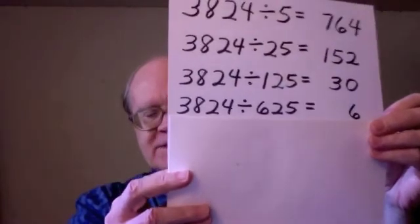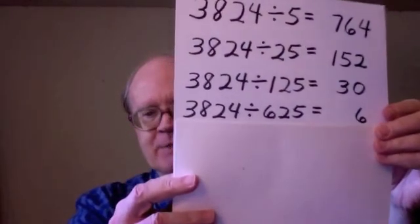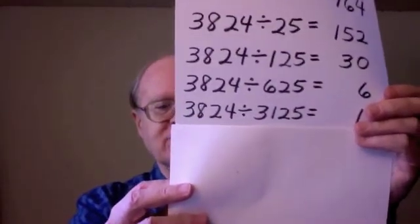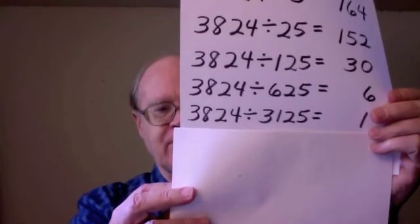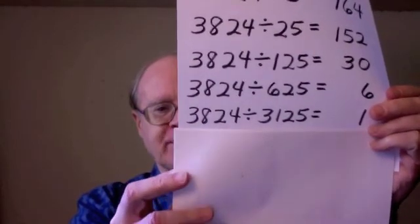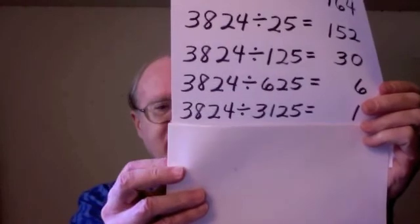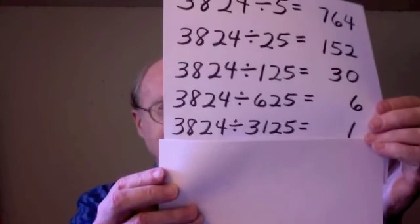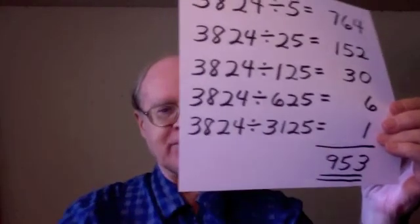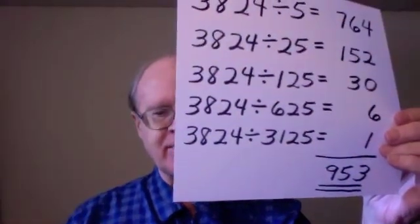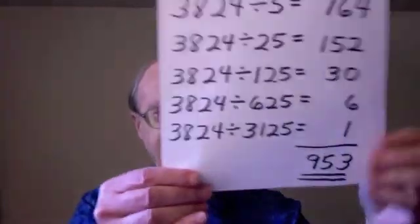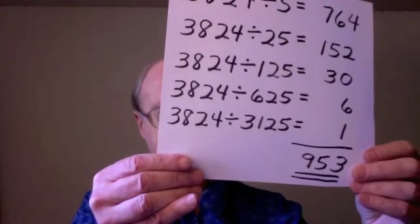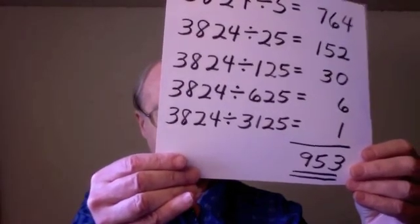One step further: 5 times 5 times 5 times 5 times 5, which is 3,125 — that gives 1 additional zero. That's as far as we go. We get the correct final answer by adding these results, and they add up to a grand total of 953. That is the correct answer: there are 953 zeros on the end of 3,824 factorial.